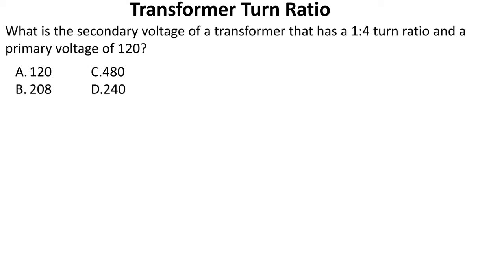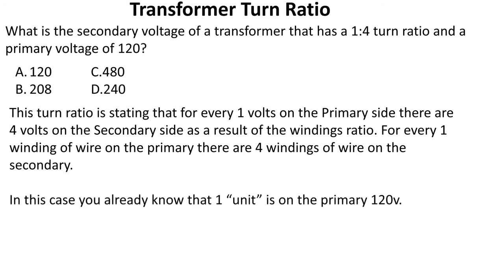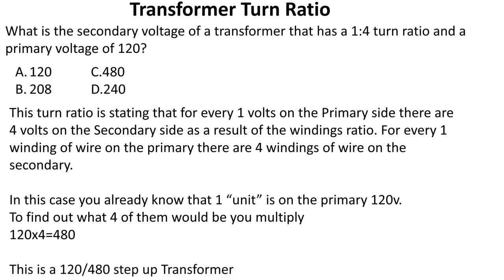What is the secondary voltage of a transformer that has a one-to-four ratio and a primary voltage of 120? This turns ratio states that for every one volt on the primary, there are four volts on the secondary — for every one winding on the primary, there are four windings on the secondary. We already know one unit on the primary is 120. Multiply 120 by four to get 480. This is a 120-to-480 step-up transformer. We select C.